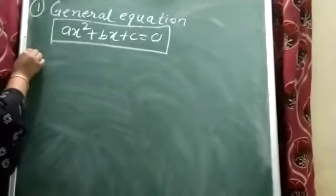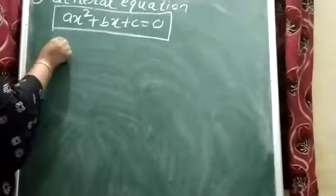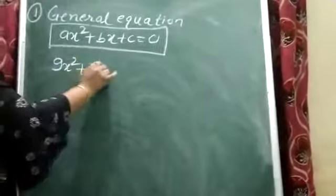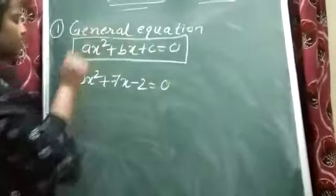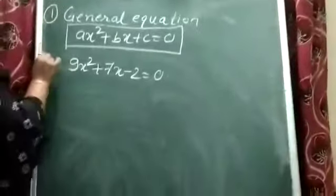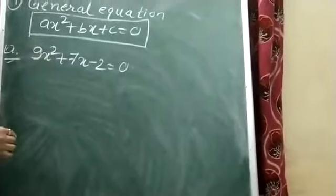Now I am writing an equation: 9x² + 7x - 2 = 0. This is an example of a quadratic equation. It is a perfect quadratic equation because here we have plus and minus signs, and the highest power is 2.